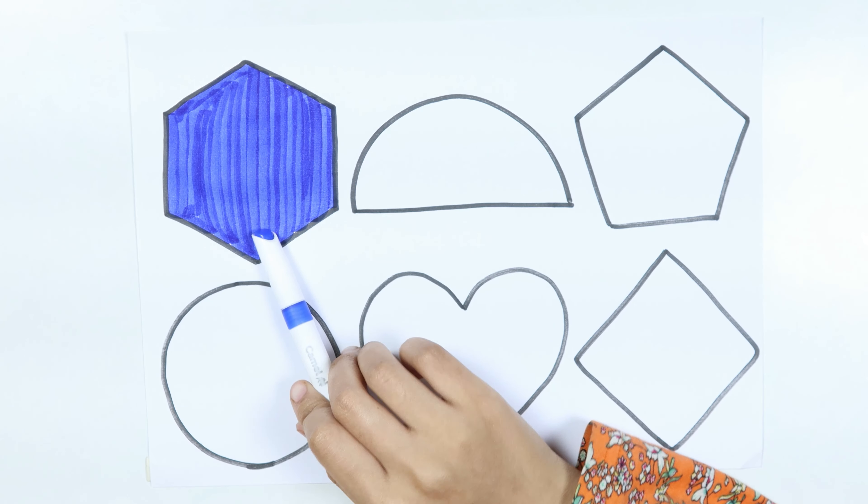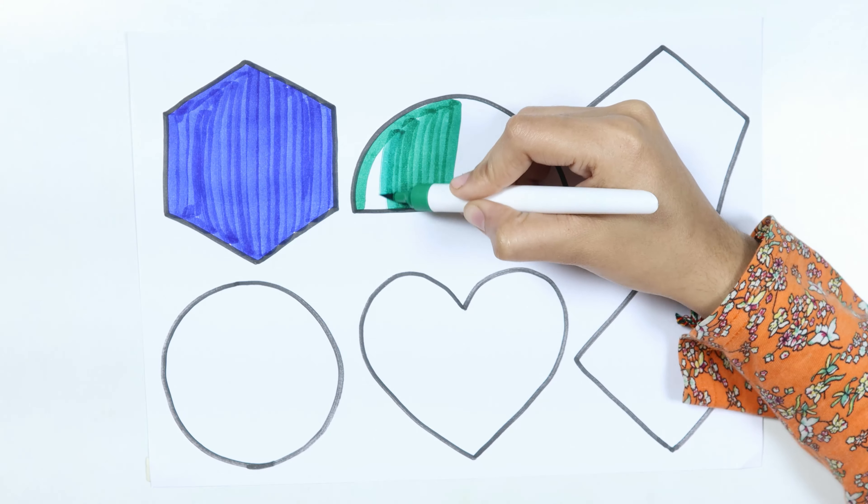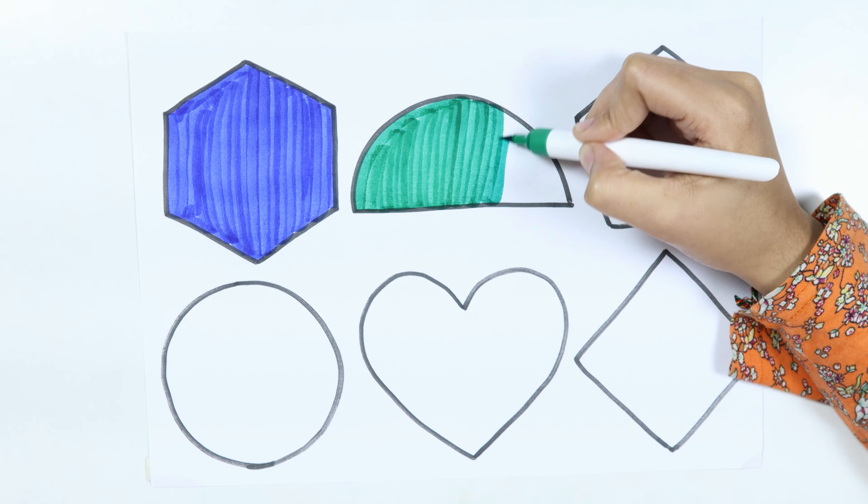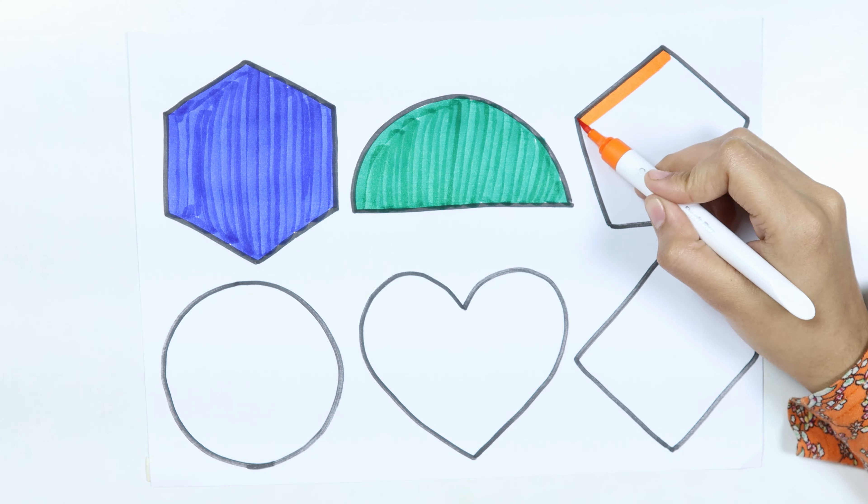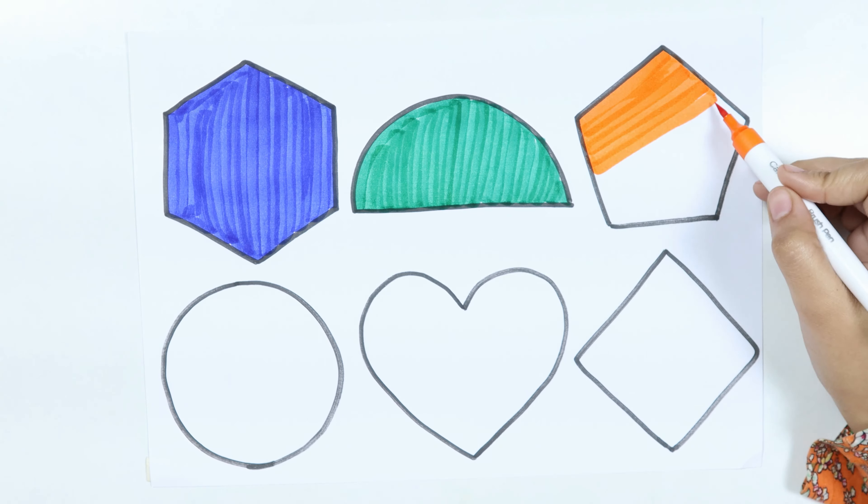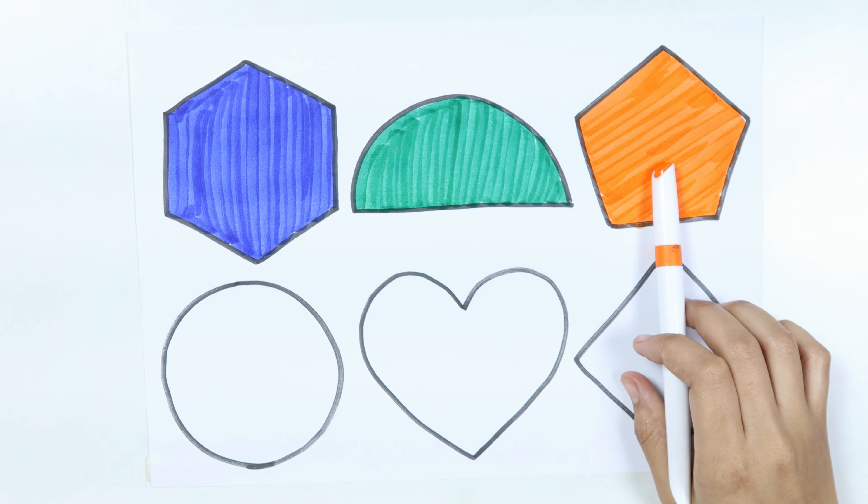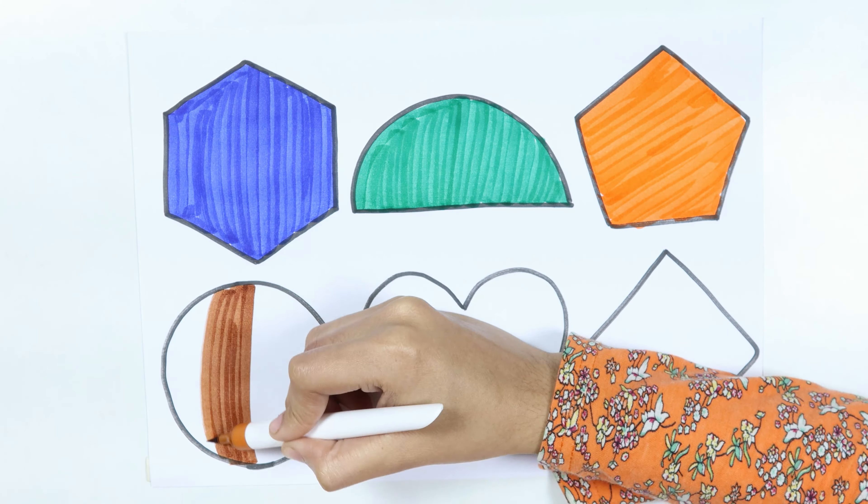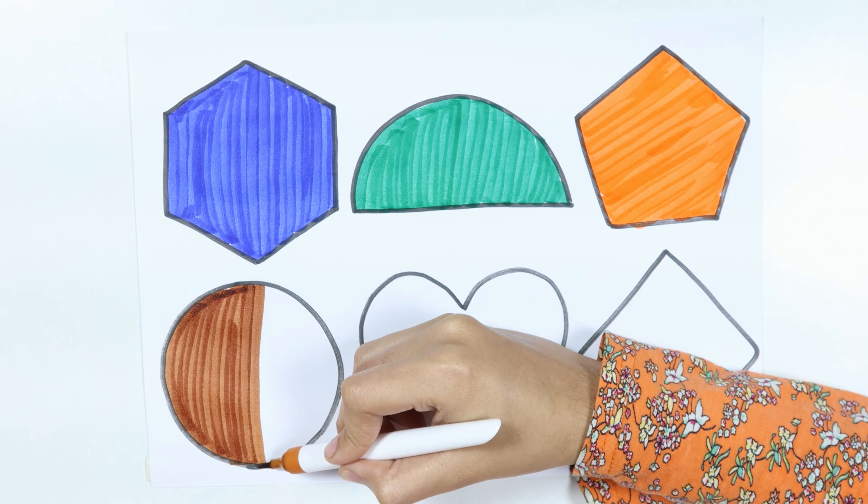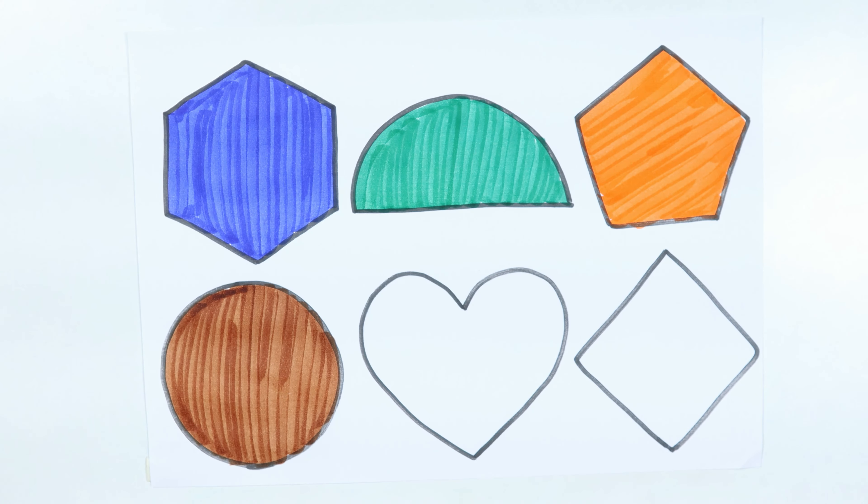Hexagon, dark green color. Semi-circle, orange color. Pentagon, brown color. Circle, red color.